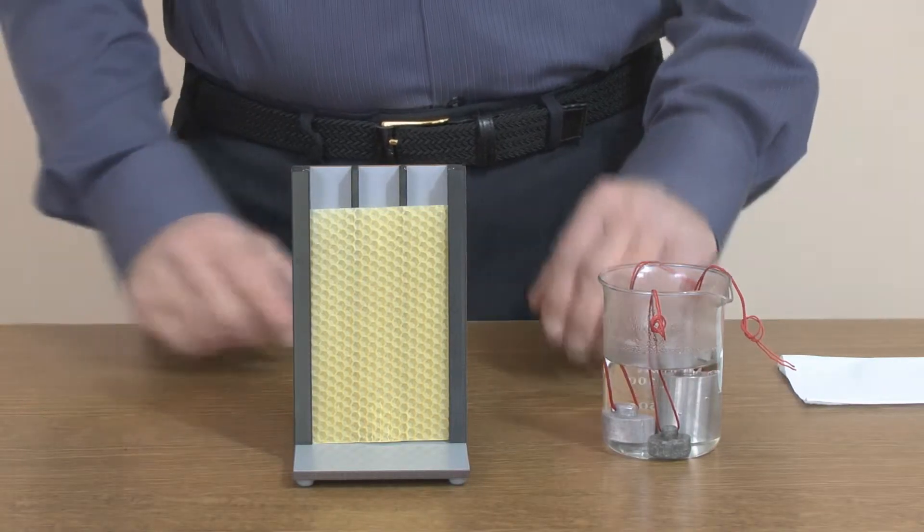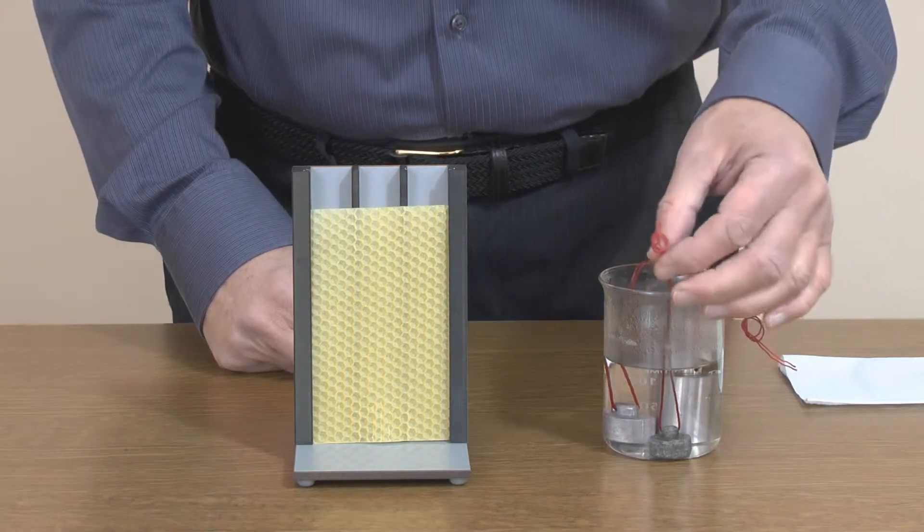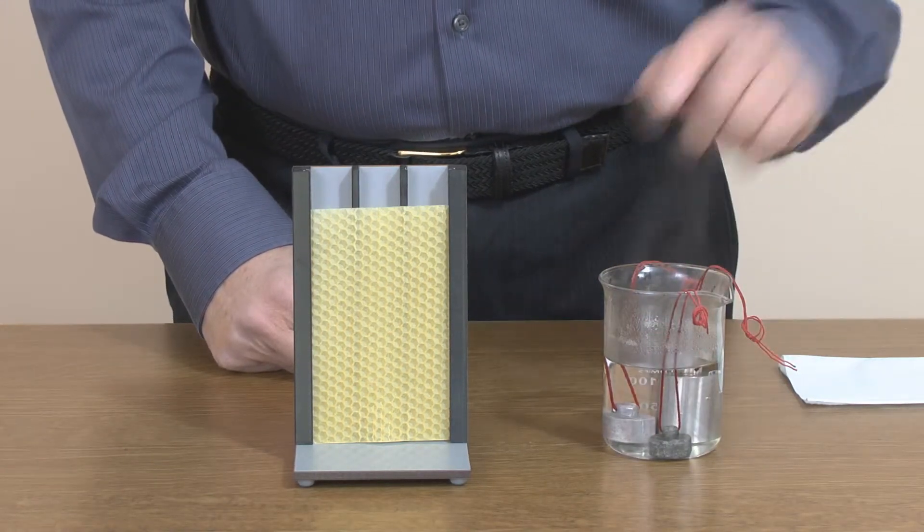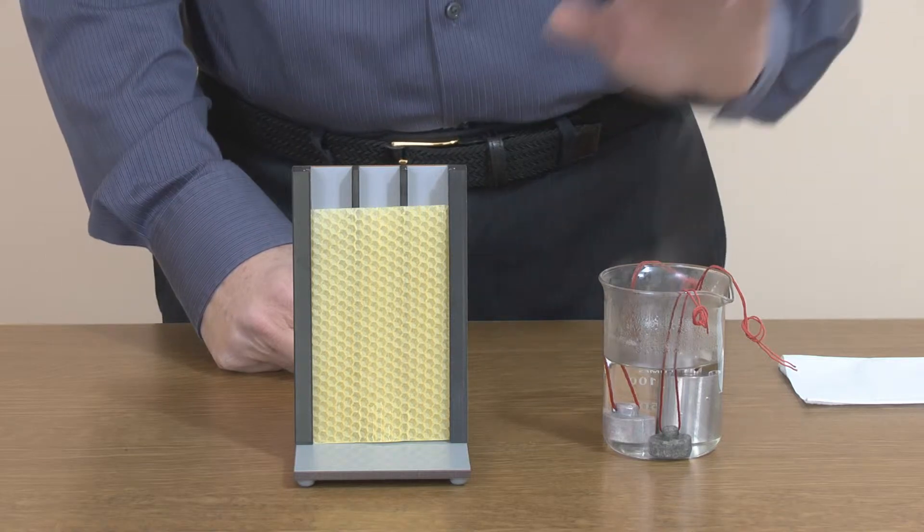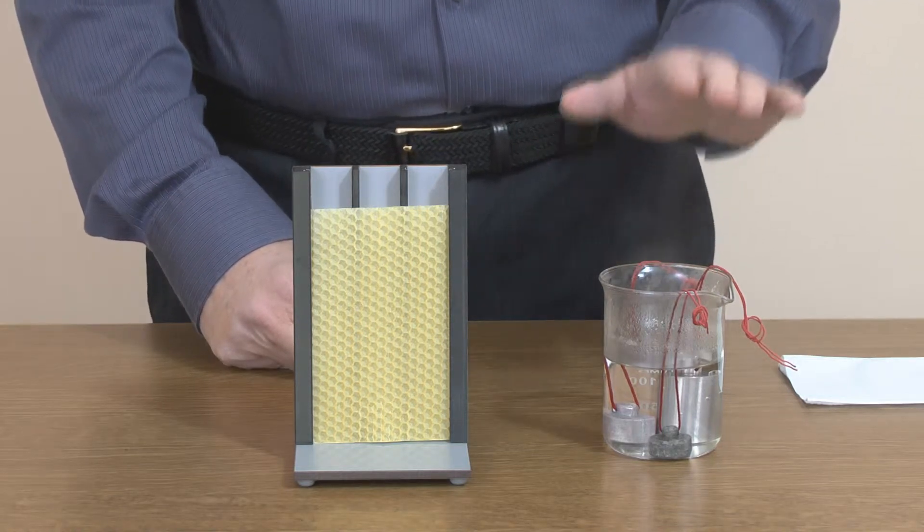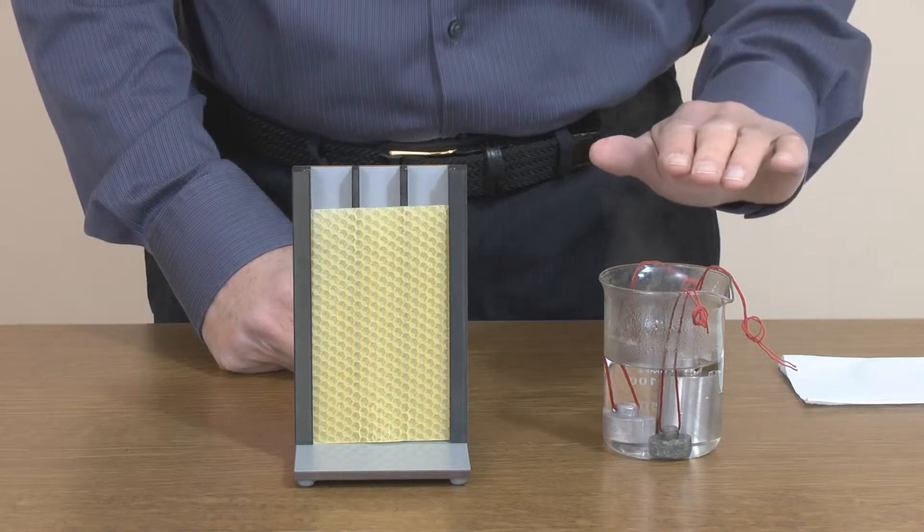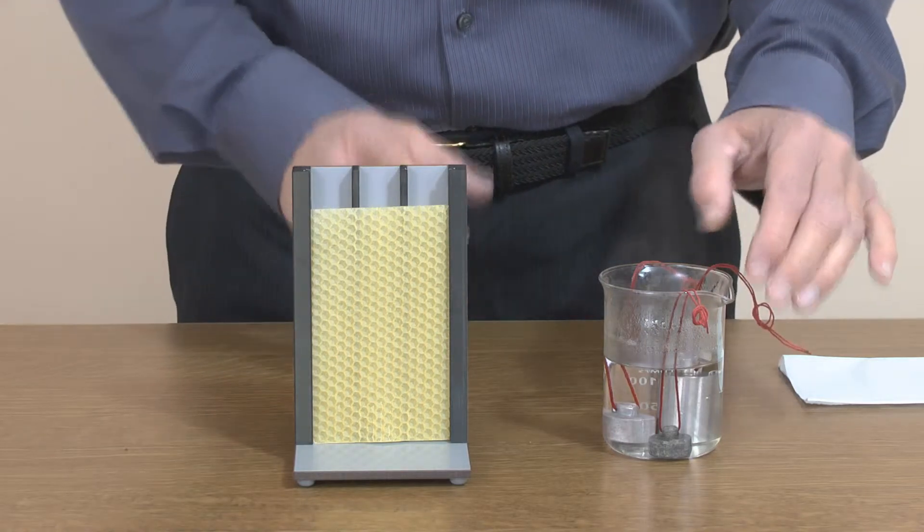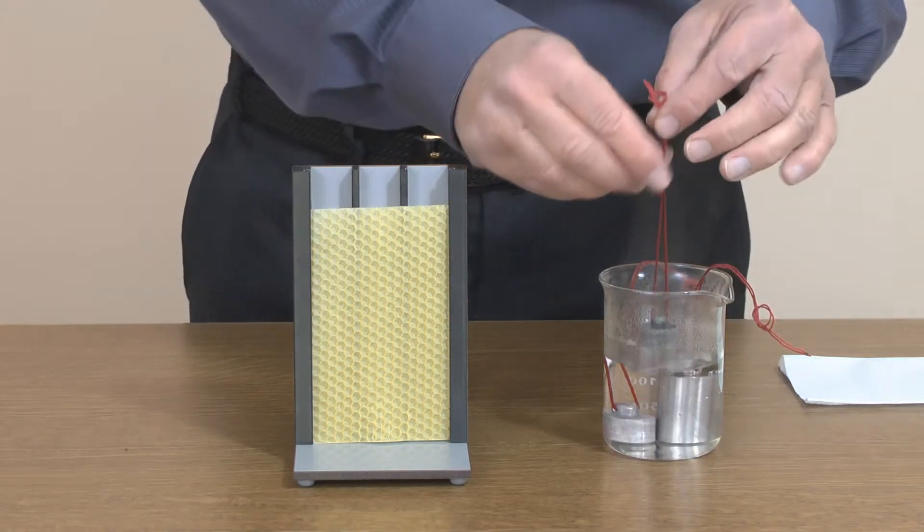We now have our three different metals, all of the same mass, all heated to the same temperature, all the same cross-sectional area. We're ready to place these metals on top of the wax.